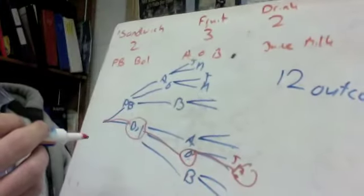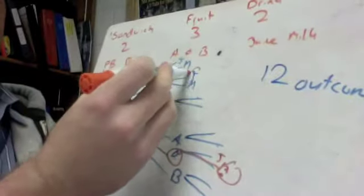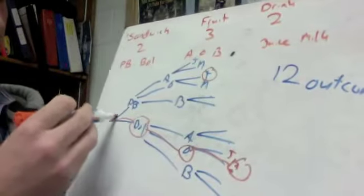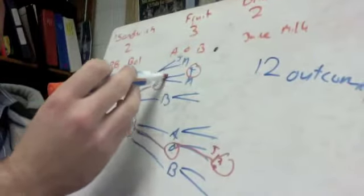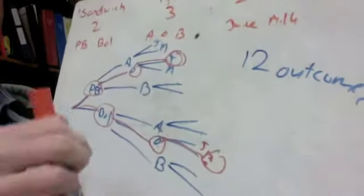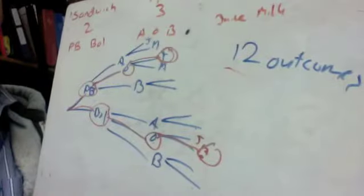So let's say I took this branch. That would be peanut butter sandwich, orange, and juice. The answer to the question is 12 outcomes.